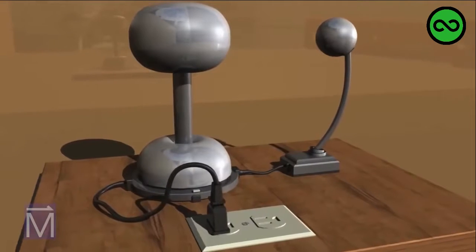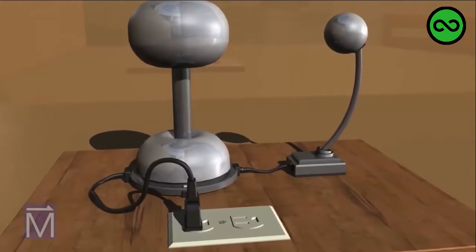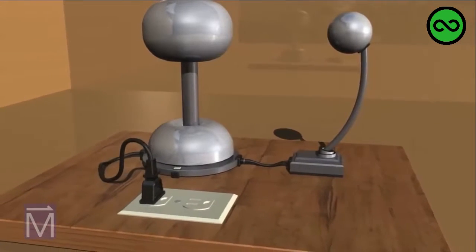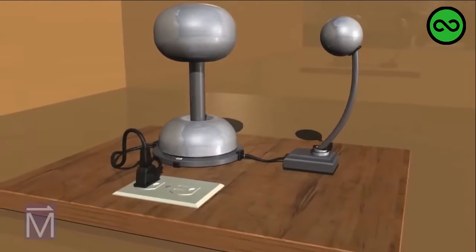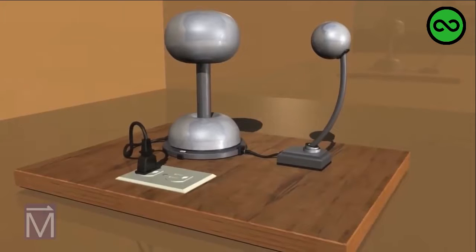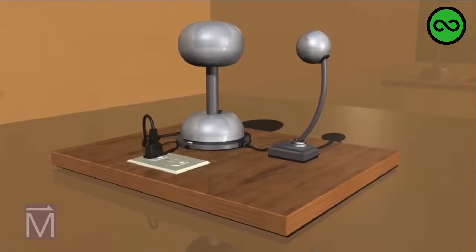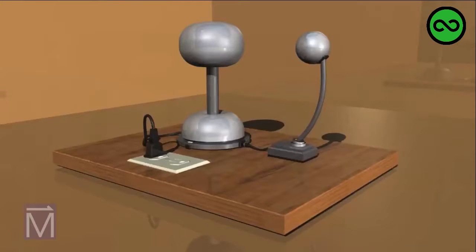The Van de Graaff generator was invented by Robert Van de Graaff around 1930. Used originally to charge particles in atomic accelerators, nowadays it's used mostly to educate students about electrostatics. It can even make your hair stand on end in a dramatic display of static electricity. We'll see here how it works.